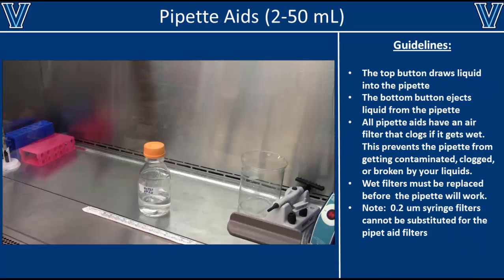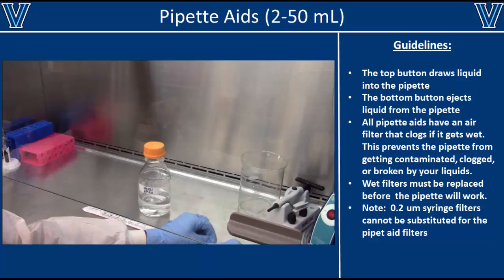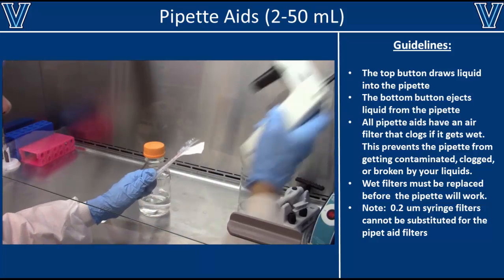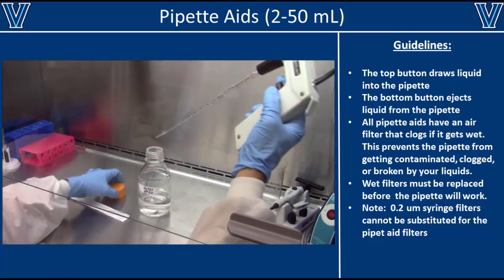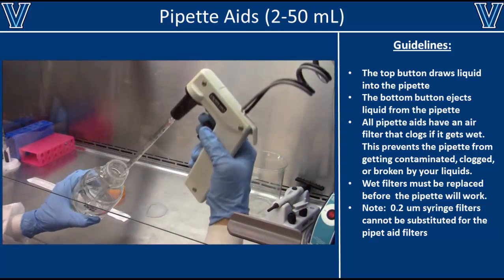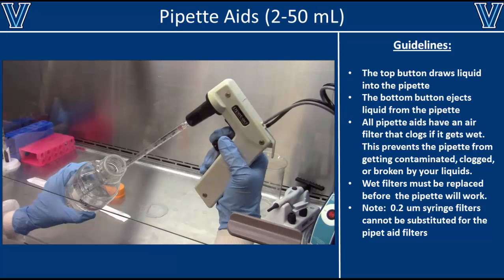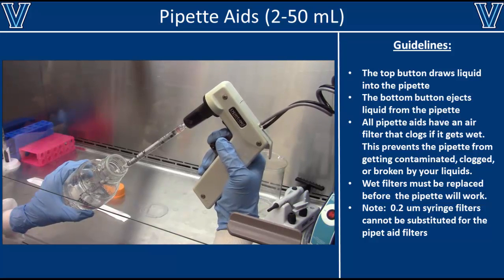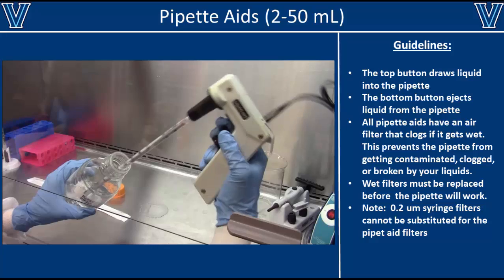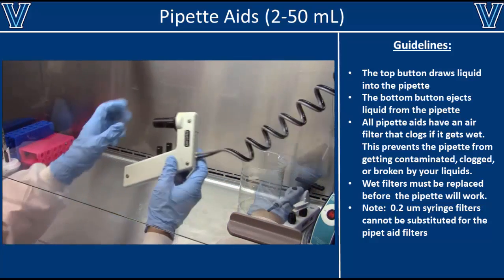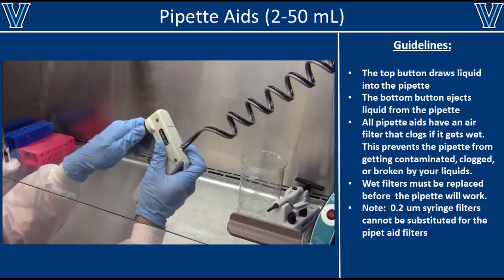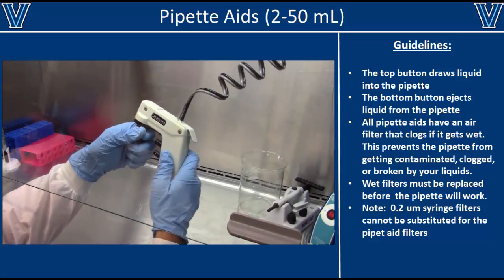If you need to transfer volumes larger than 1 ml, you'll need to use a pipette aid. Pipette aids use much larger tips with volume ranges from 2 to 50 ml. Begin by tightly inserting the tip into the pipette aid, then submerge the tip into the liquid. Draw liquid up with the top button and eject liquid with the bottom button. If at any point you draw liquid too far up, the pipette will stop working. This is because all pipette aids use an air filter to protect themselves from liquid contamination.